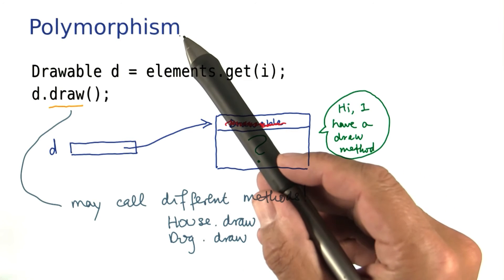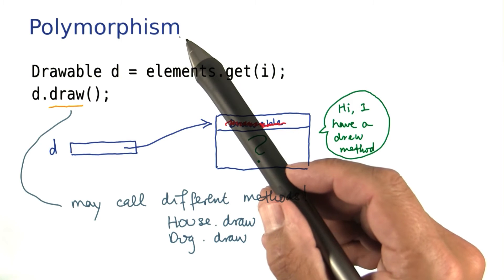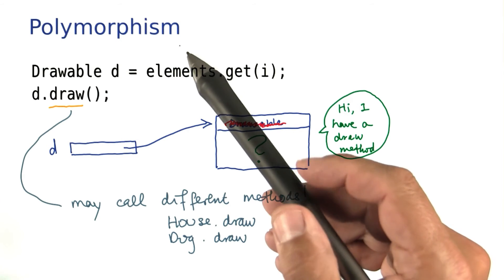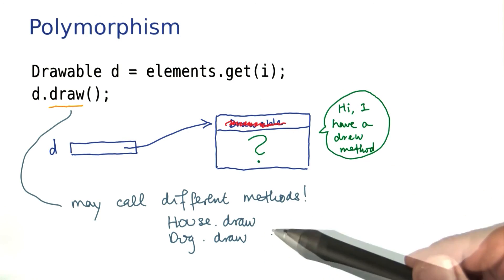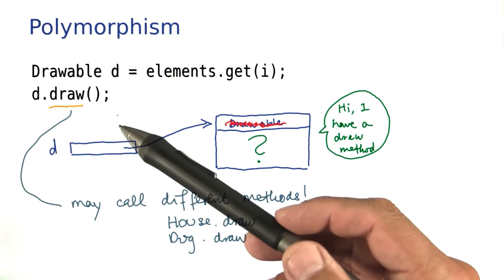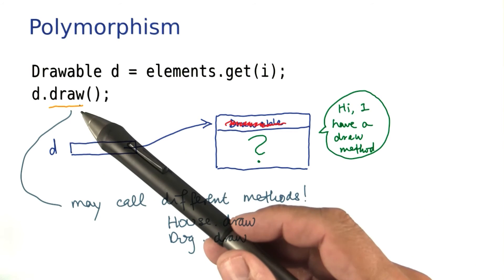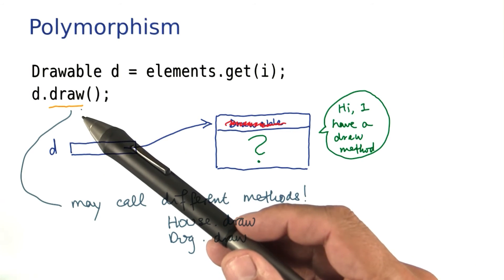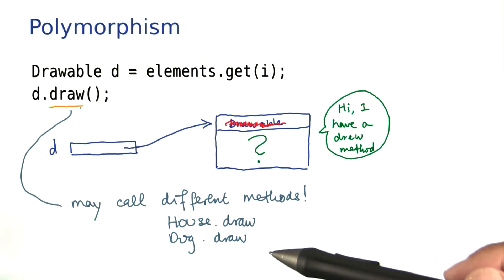This variation is called polymorphism, which is just a fancy word for saying different shapes. In our scene, that's a very appropriate name, because the draw method can draw entirely different shapes depending on what the implementing class does.